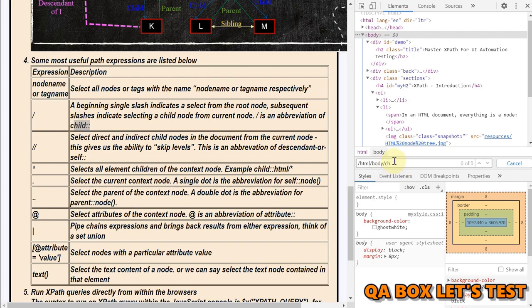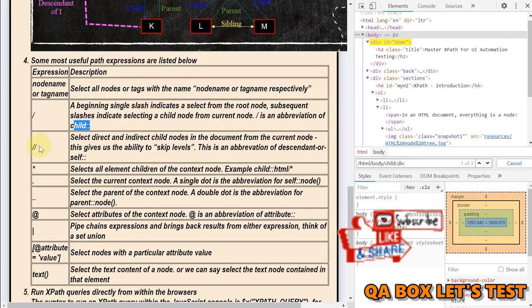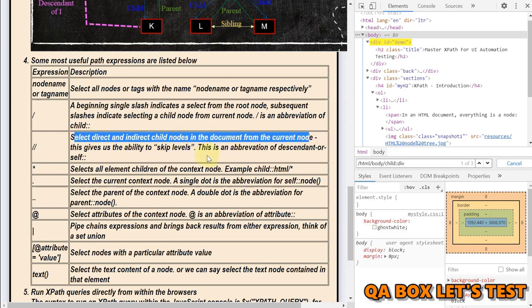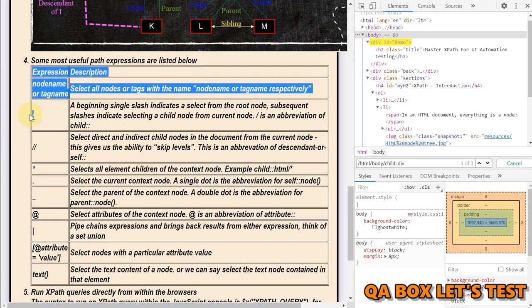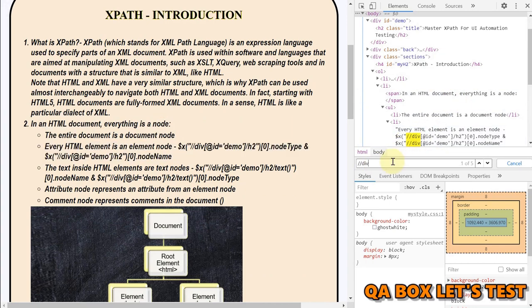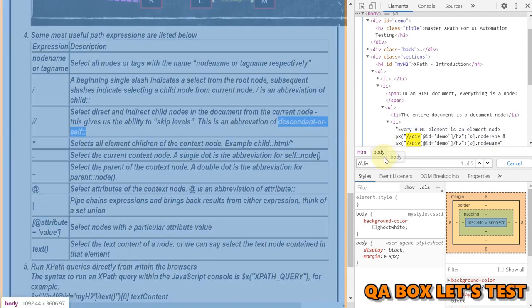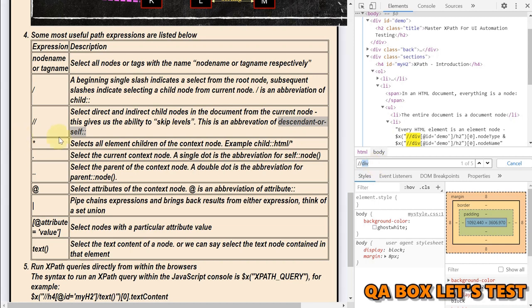Two forward slashes select direct and indirect child in the document from the current node. This gives us the ability to skip level. Whenever we use this, we usually are working on absolute xpath. Whenever we go for two forward slashes, we're working with relative xpath. This is an abbreviation of descendant or self. All I could do is now two forward slash and say div. You could see that I find five divs. If I use this particular syntax, then also it would do the same because it's an abbreviation. Usually when we work, we go for abbreviations. We don't use this.